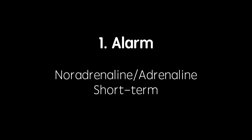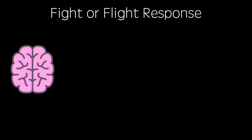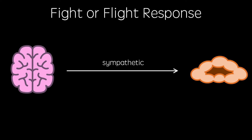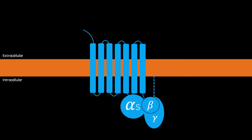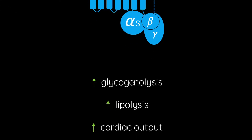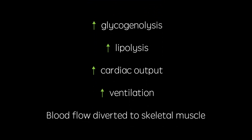This stage is a short-term solution to physiological stress and is mediated by adrenaline and noradrenaline. During the fight-or-flight response, the brain sends sympathetic signals directly to the adrenal medulla, which increases the concentration of adrenaline and noradrenaline in the circulation. These catecholamines act on adrenoceptors on target cells, increasing glycogenolysis, glycolysis, cardiac output and ventilation. Additionally, blood flow is diverted away from inessential processes in favour of skeletal muscle.